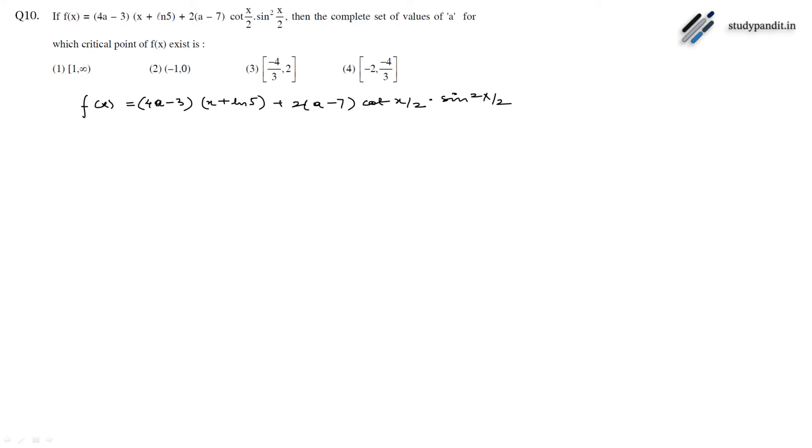We will simplify it. (4a-3)x plus ln of (5 plus (a-7)) times cot(x/2) by 2 can be written as cos(x/2) divided by sin(x/2) times sin squared (x/2). This becomes (4a-3)x plus ln of 5 plus (a-7) times sin x.